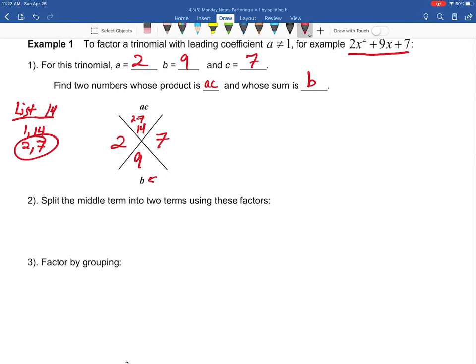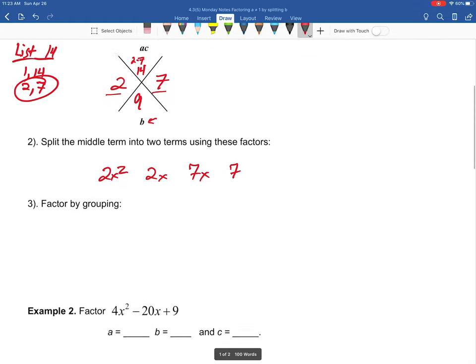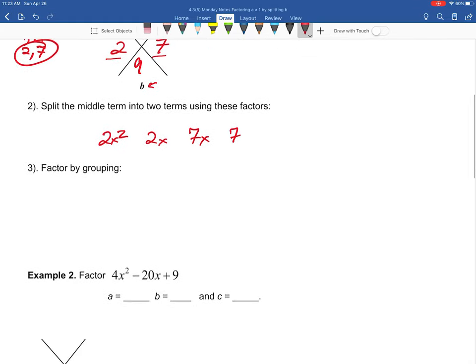So now part 2 is going to say: go ahead and split the terms using these factors. Well, the factors we're referencing are these 2 and 7, so we've got our 2x and our 7x. Again, the order there doesn't really matter too much. And then just like before on our previous notes, we just brought down the 2x² and the 7. Part 3 is just saying factor by grouping now.